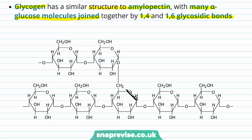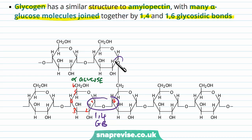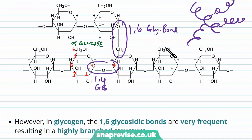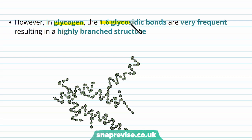Glycogen is very similar to what we saw with amylopectin. We've got these alpha glucose molecules with numbered carbons, and we've got chains of 1,4 glycosidic bonds as well as 1,6 glycosidic bonds — essentially the same structure as amylopectin. Slinkies branched off to another slinky — technically called a helix — making that similar structure we saw before. The main difference with glycogen is that these 1,6 glycosidic bonds making the branches are found much more frequently and much more regularly, giving a very highly branched structure.